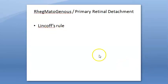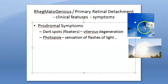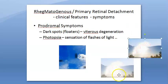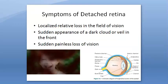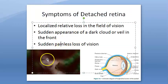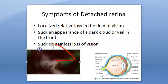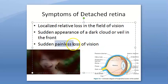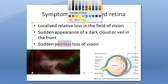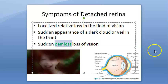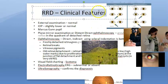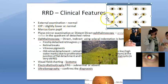We also saw how to detect location using Lincoff's rule and other rules, then the symptoms: black spots, photopsia (flashes of light), localized loss of field of vision, sudden appearance of a dark cloud or veil in front, and sudden painless loss of vision. Remember — this is a painless loss of vision.